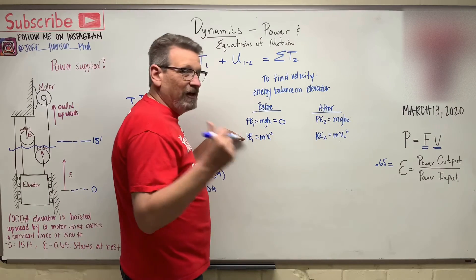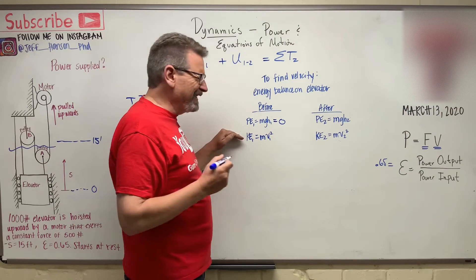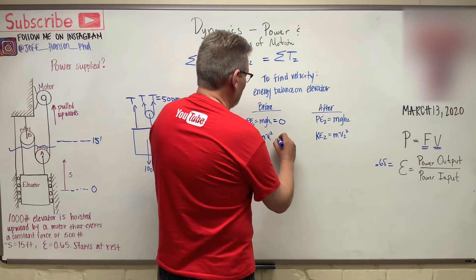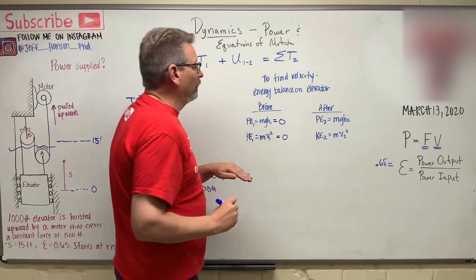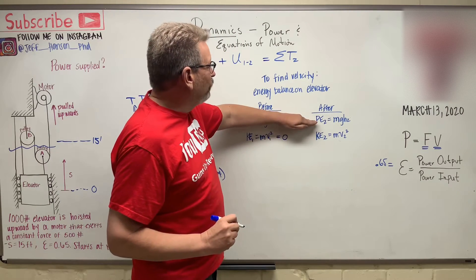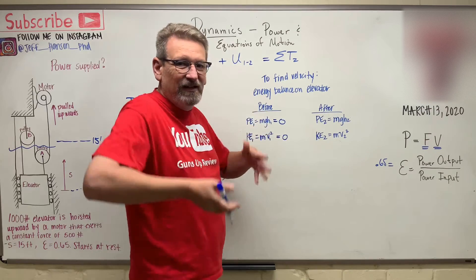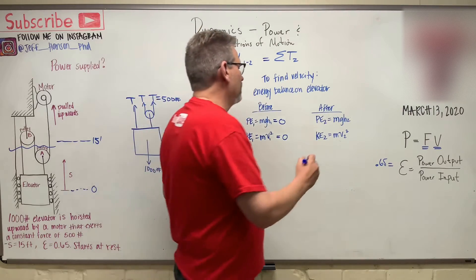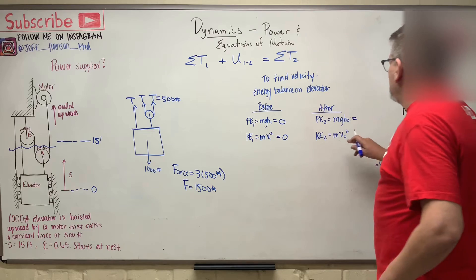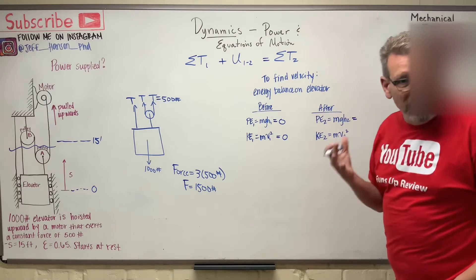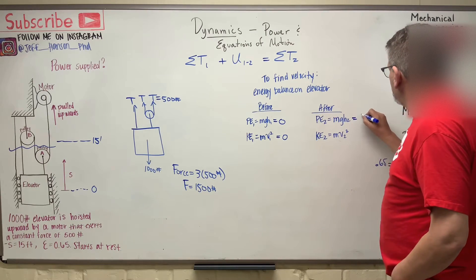The kinetic energy, the elevator starts at rest. So how much kinetic is there at rest? Well, of course, that also is 0. So let's talk about after we raise it to height. Now we've raised it up 15 feet. So we take our mg, which is w, which is given as a thousand pounds.